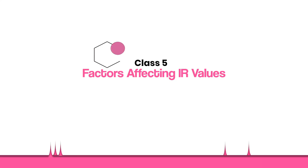Hello everyone, welcome back to another organic spectroscopy lecture series — this is Class 5. In our previous discussion, Class 4, we talked about IR values of different functional groups, where each functional group has a different range where the peak is observed. The reason for this range is that different factors present in a particular molecule actually affect the IR value of those functional groups. Starting from this class, we will discuss those different factors that affect IR values.